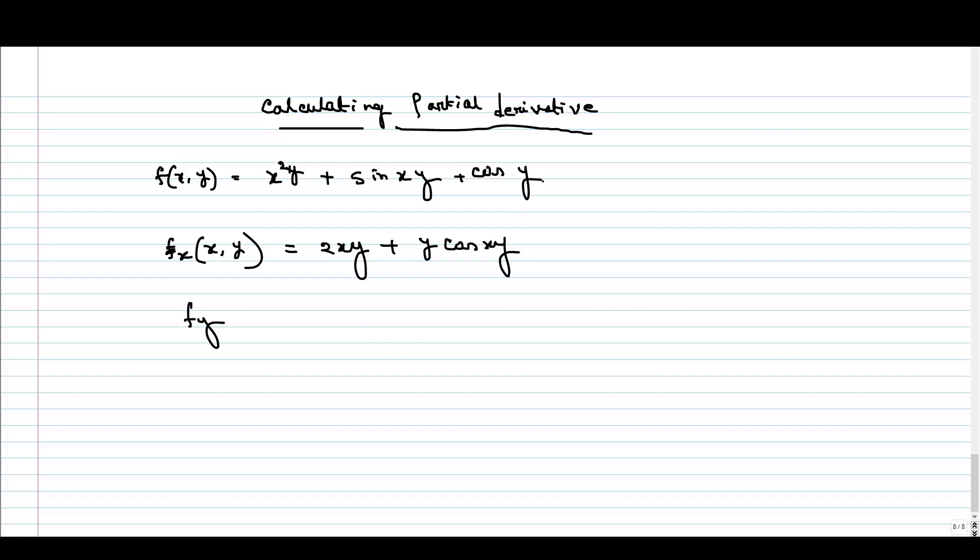Now what is our fy? fy of xy is nothing but, now we are treating x as the constant. So x square is constant here. So we will get x square and if we take the derivative of y, we will get 1.